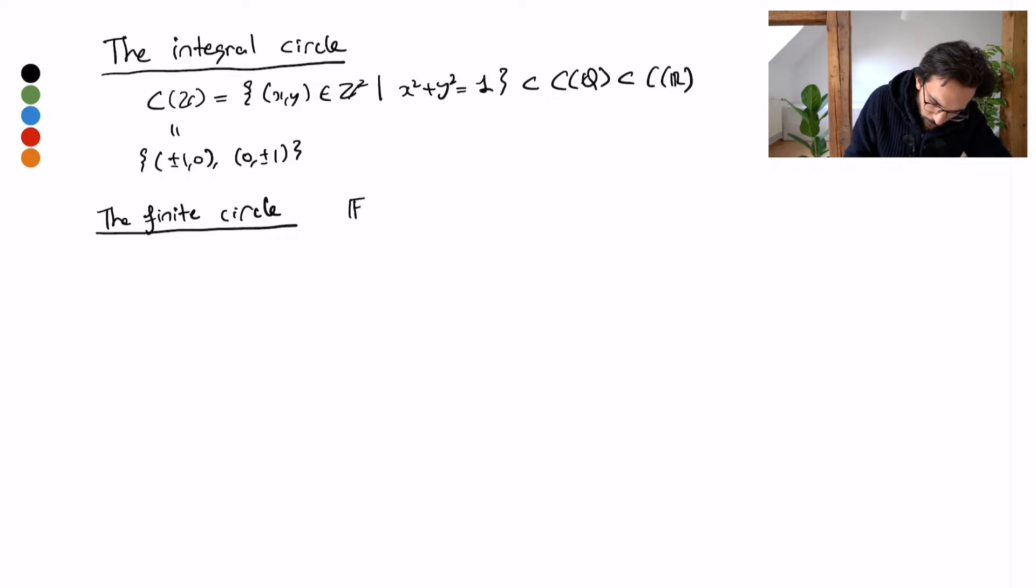So now we're going to study our circle over the finite fields, and this is related to the integral circle in the sense that instead of plugging integers for x and y, I'm going to plug in residue classes of integers modulo primes. So we're going to introduce or recall the field F_p.